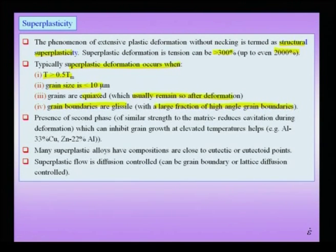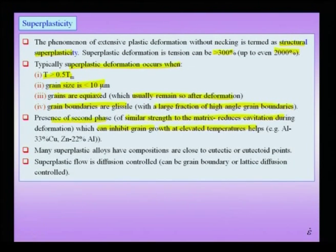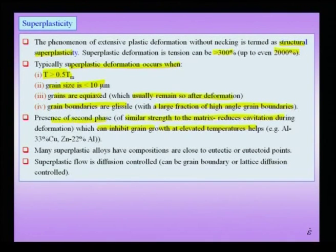To summarize the factors: temperature is typically more than about 0.5 Tm, close to the recrystallization temperature; grain size is in the micron scale; grains are equiaxed; and we have a large fraction of glissile grain boundaries. The presence of a second phase of similar strength to the matrix reduces cavitation during deformation and can inhibit grain growth at elevated temperature. Even if I start with micron-size grains, at high temperature there is a tendency for grain growth, which would inhibit further superplastic deformation.